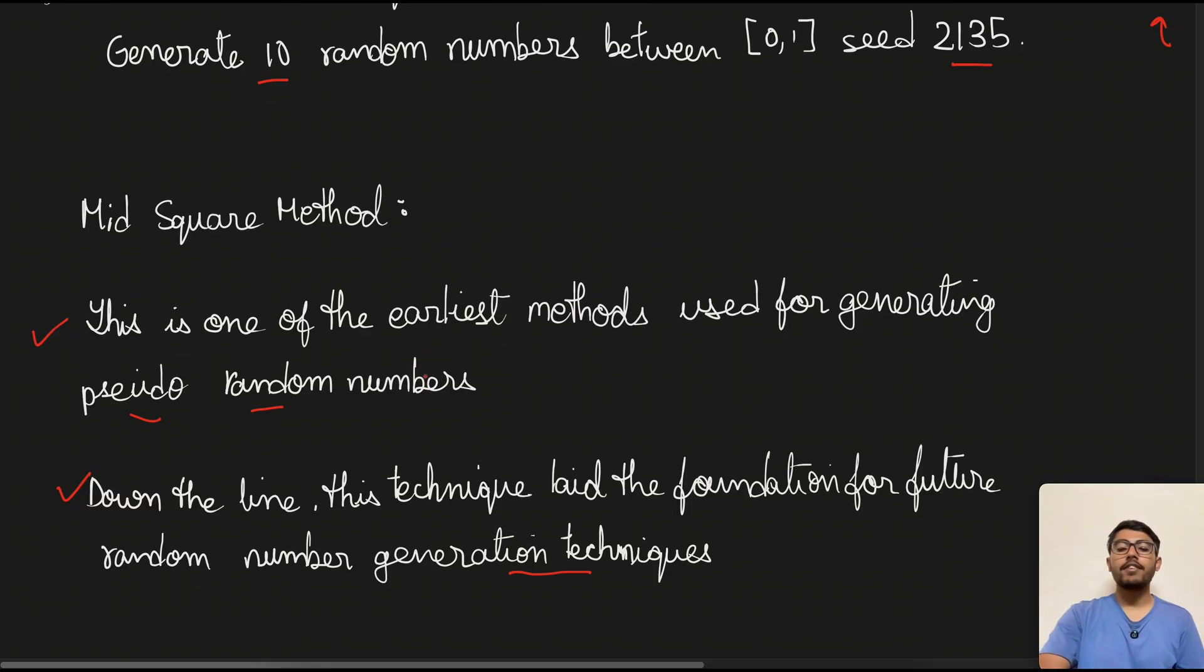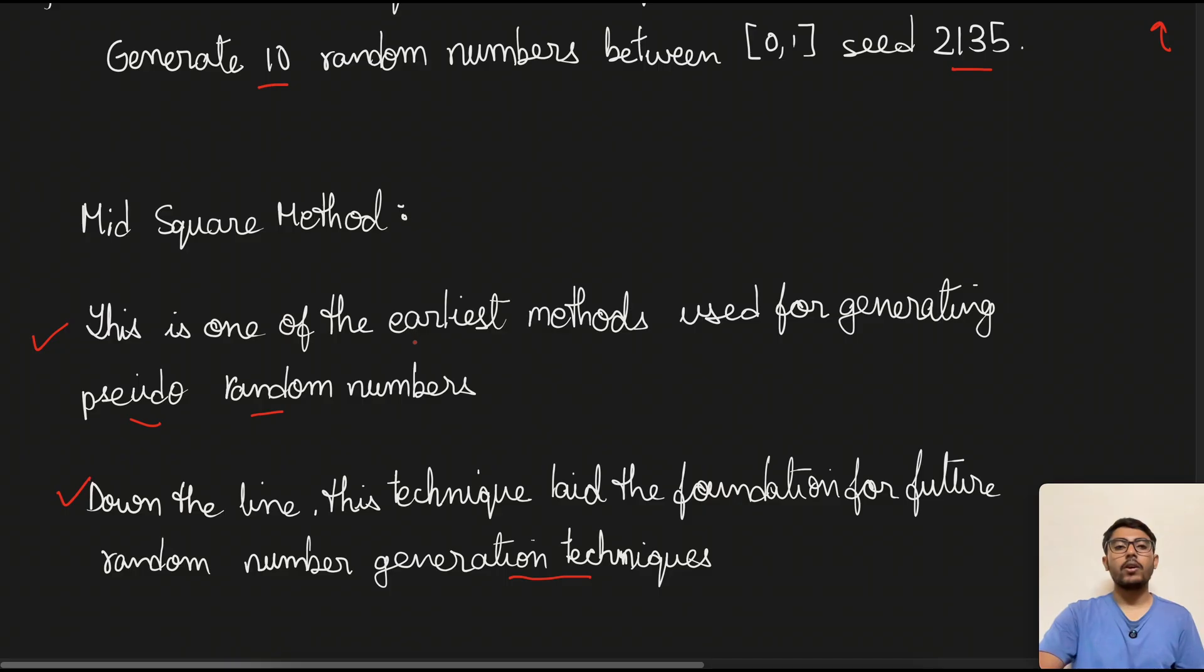One more interesting fact is before we had fancy libraries like random in Python or math.random in JavaScript which you might have used, early programmers and mathematicians needed a manual way to generate random numbers that looked random. And this method which we are going to see today was developed by John von Neumann, one of the founding fathers of computing. So now let's break this down and explore how it works and basically generate a few random numbers using this technique.